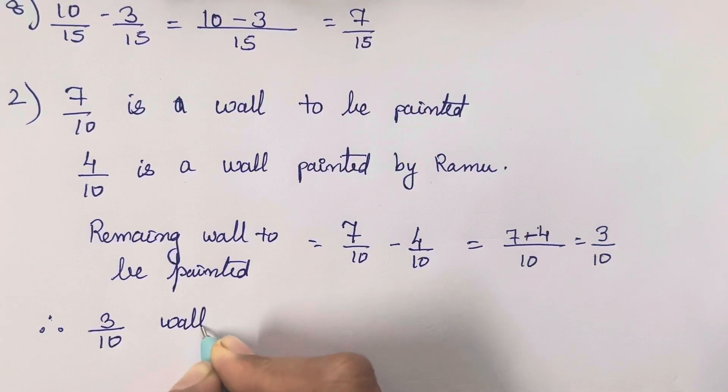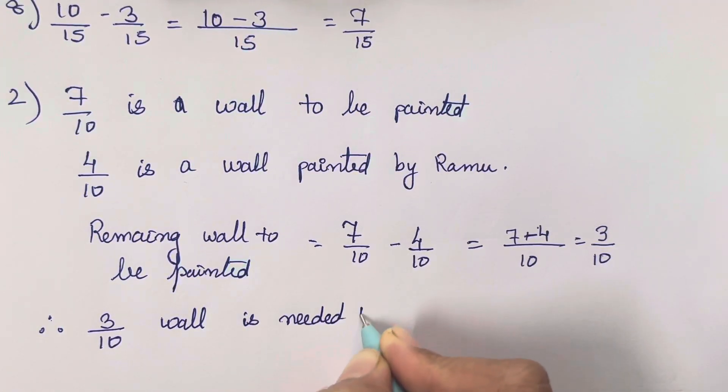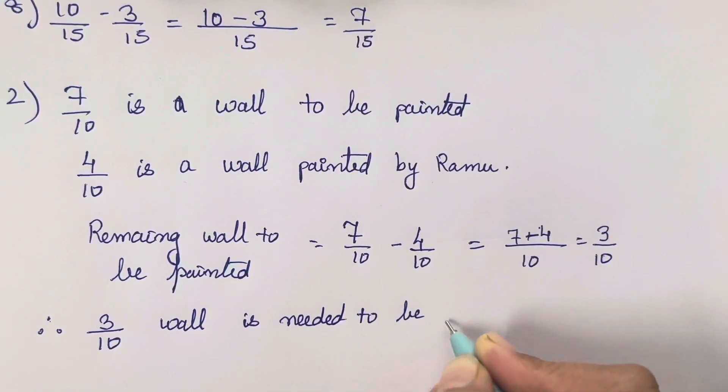So this is going to be 3 upon 10. So therefore, 3 upon 10 wall is needed, 3 upon 10 wall is needed to be painted.